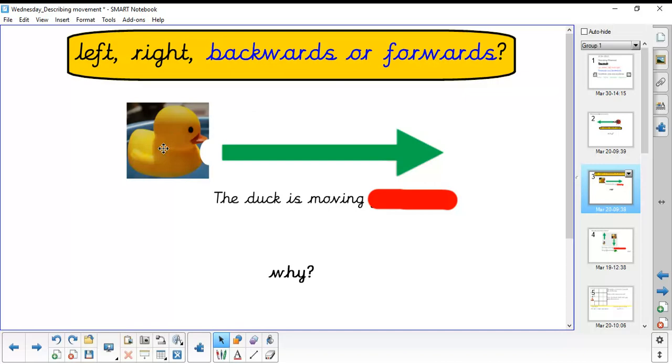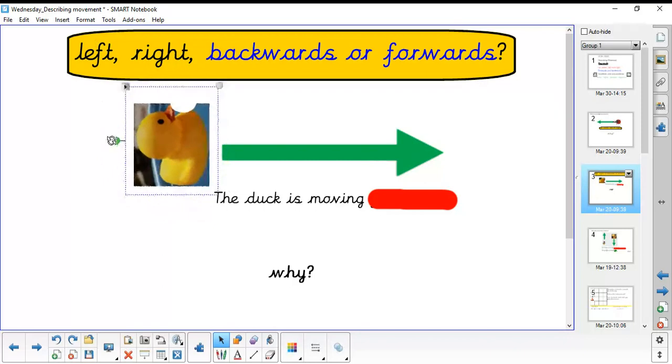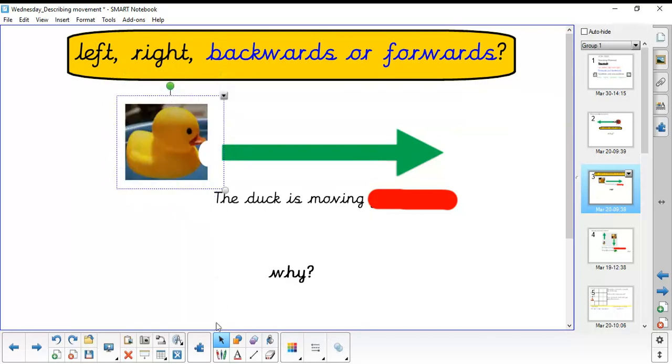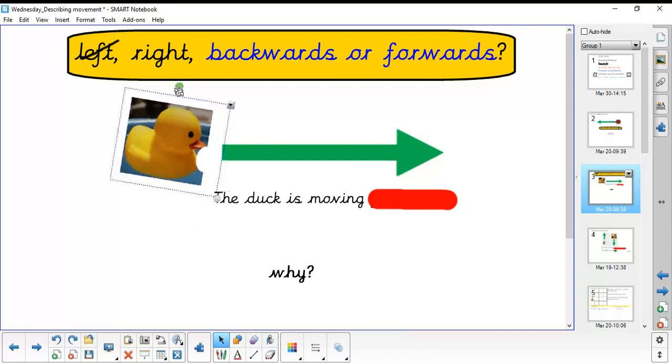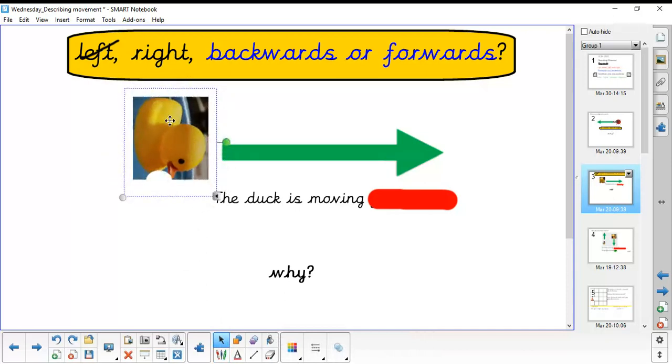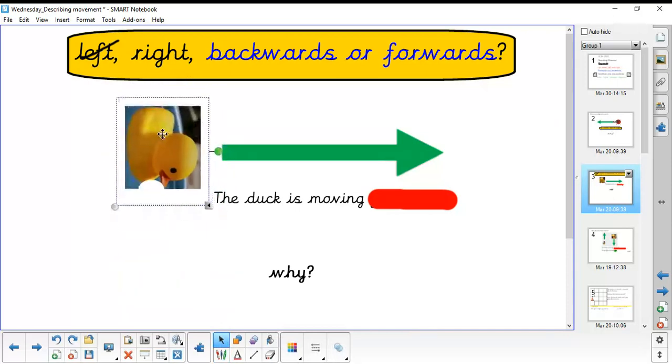If you said the duck was going to be moving left, it would do this. It would turn to the left and it would start to move up. So it can't be left. If you said for the duck to move right, it would turn to the right. So it can't be right either.